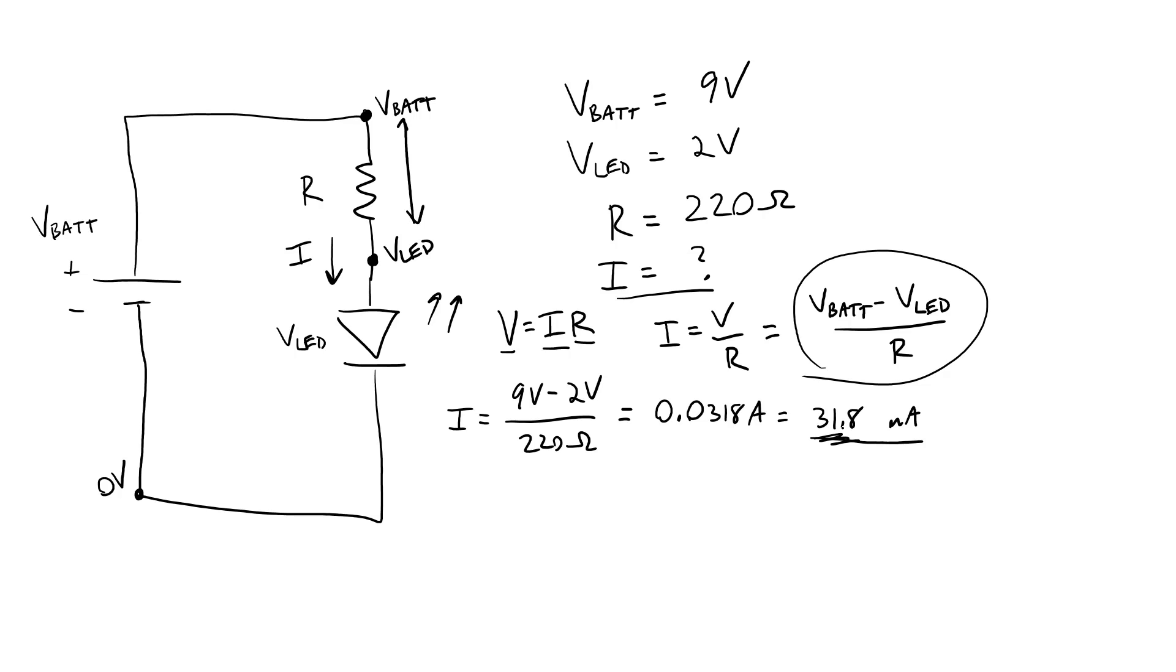We're not quite done yet, though. You still need to double check the power rating for the resistor to make sure you are not exceeding that power rating and going to burn it out. We do that using the equation P equals I squared R. So if we plug in the values we have, we have the current 0.0318 amps squared times 220 ohms, and that gives us a value of 0.222 watts or 222 milliwatts, which in this case is less than 250 milliwatts, which again is the current limit for a one quarter watt resistor.